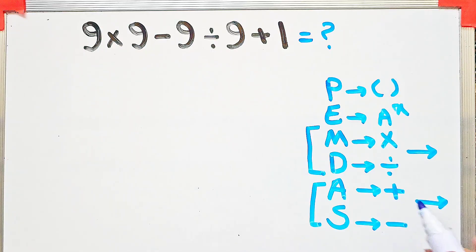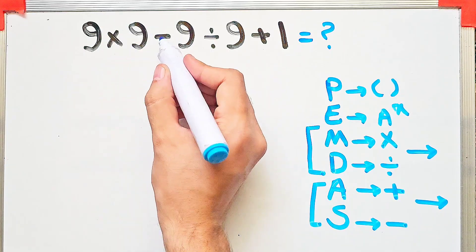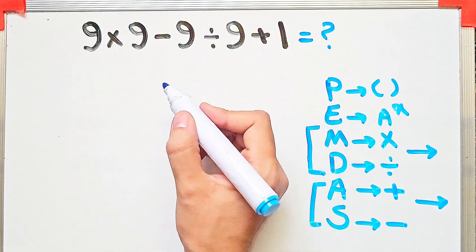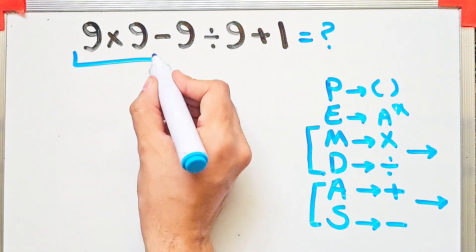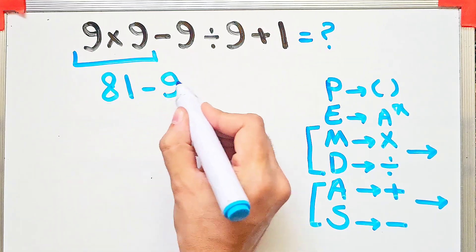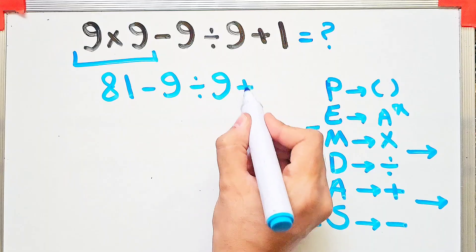When we have both in an expression we start from the left and simplify. In this question we have multiplication, subtraction, division, and addition. First we do the multiplication: 9 times 9 equals 81.